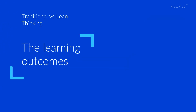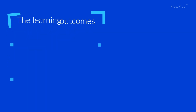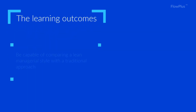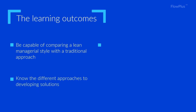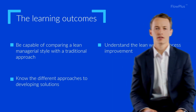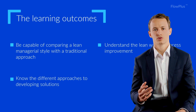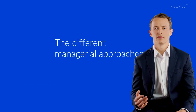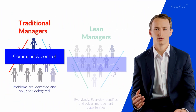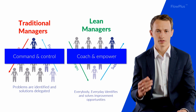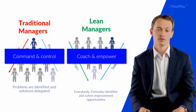By the end of this module, you'll be capable of comparing a lean managerial style with a traditional approach. You'll know the different approaches to developing solutions, and you'll understand the lean way of process improvement. Let's compare the traditional command and control approach with the lean way of thinking. This will help you make decisions later that align with lean thinking and hopefully avoid falling into some of the traps that are ingrained in the traditional ways that we work.